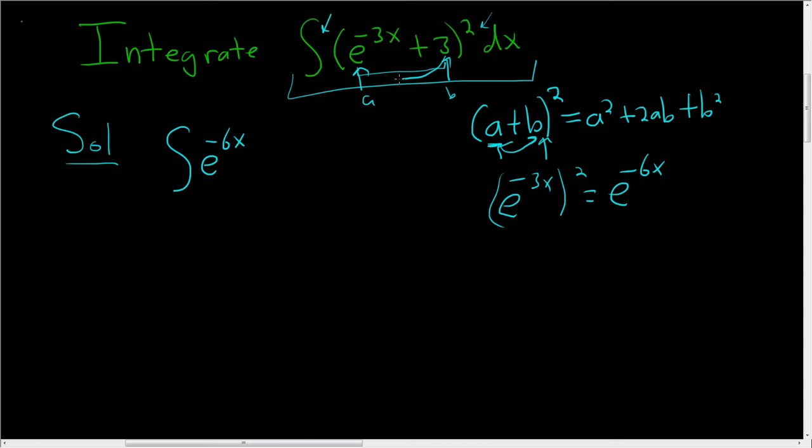Now you have to multiply the 3 and the e to the negative 3x and multiply by 2. So we'll get 6 e to the negative 3x. And then we square the 3, so we get 9. And don't forget the parentheses, dx. So all we did was multiply it out using the formula.